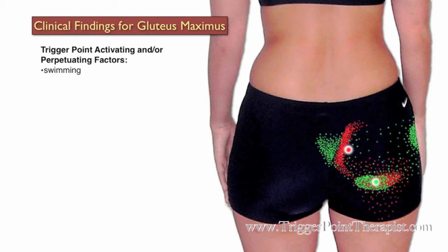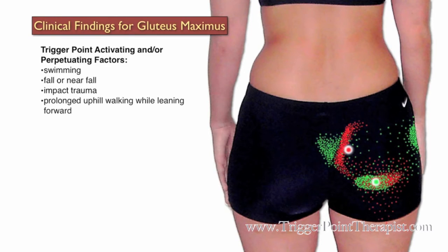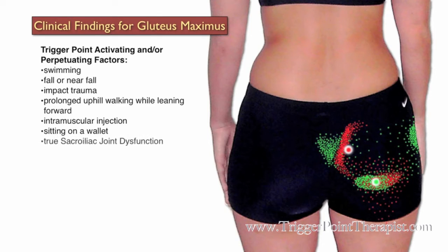Some activating factors for gluteus maximus trigger points include swimming, a fall or near fall, impact trauma, prolonged uphill walking while leaning forward, an intramuscular injection as with a flu shot or booster shot, sitting on a thick wallet, and true SI joint dysfunction.